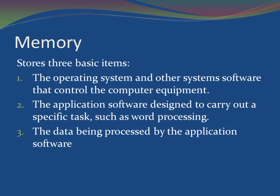Memory stores three basic items: one, the operating system and other system software that control the computer equipment; two, the application software designed to carry out a specific task such as word processing; and three, the data being processed by the application software. When a computer transfers program instructions and data from a storage medium into memory, it stores them as bytes, each in a precise location called an address — a unique number identifying the location of the byte in memory.